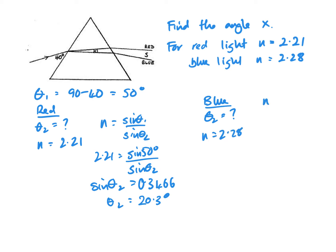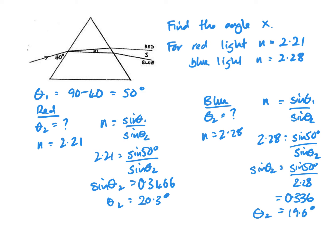Using the different value of n, sin theta 2 is 0.336, and theta 2 is 19.6 degrees. So X is the difference between these two, which is 0.7 degrees.